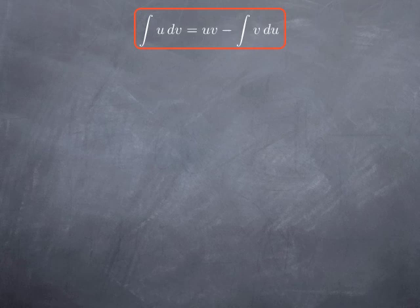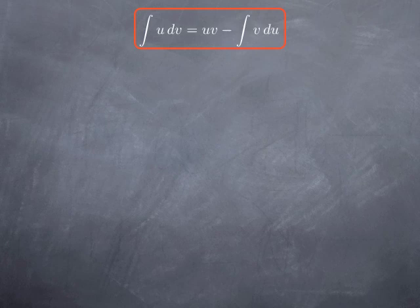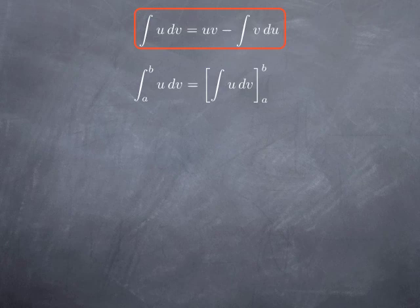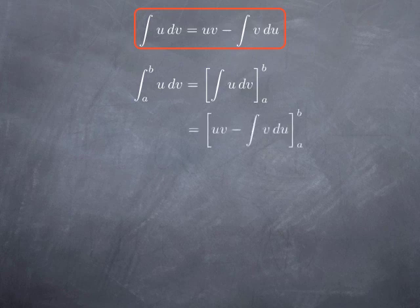What we have seen before is that if we want to find an antiderivative of a function that we can interpret as a product of a function u with a derivative dv of another function v, then we can obtain this antiderivative by taking the product of the functions u and v minus an antiderivative of v multiplied by the derivative of u.